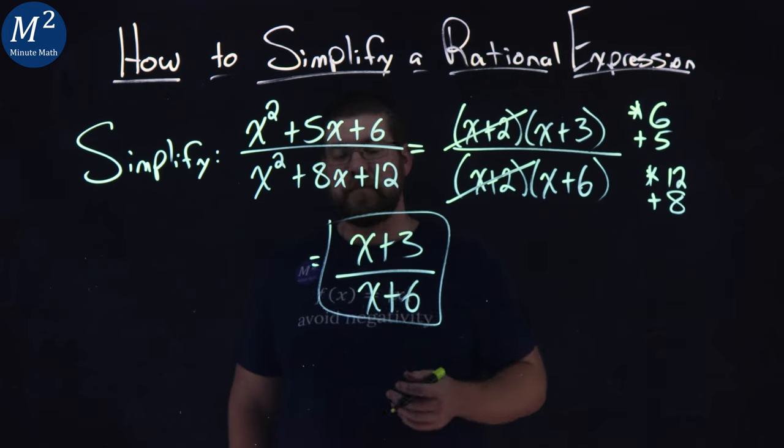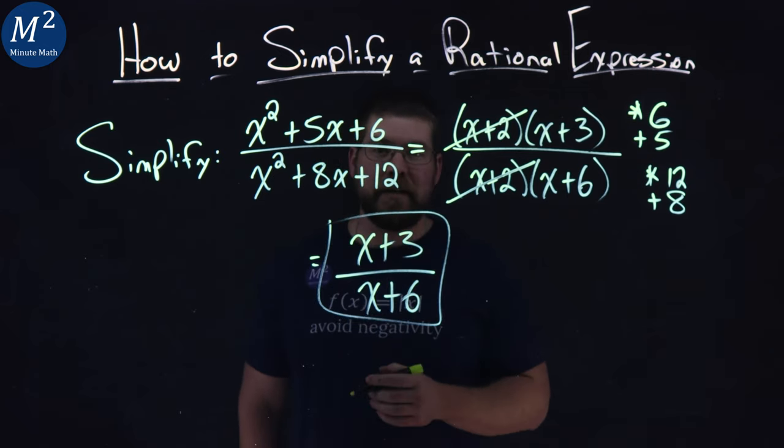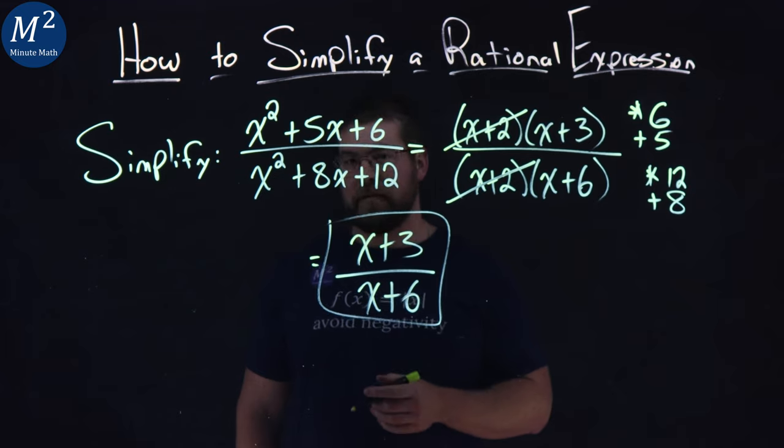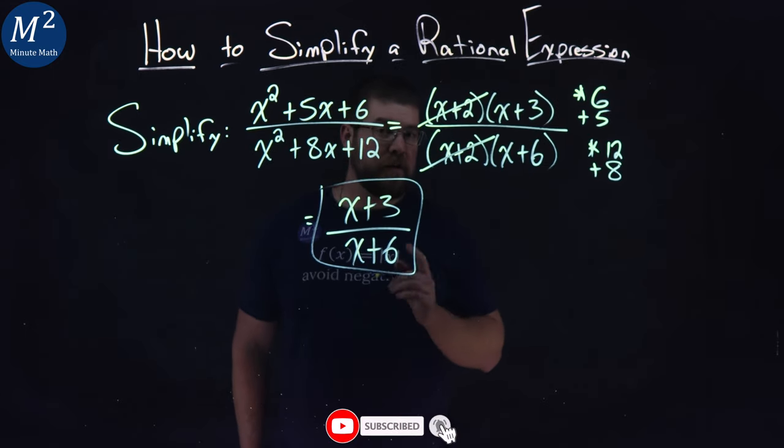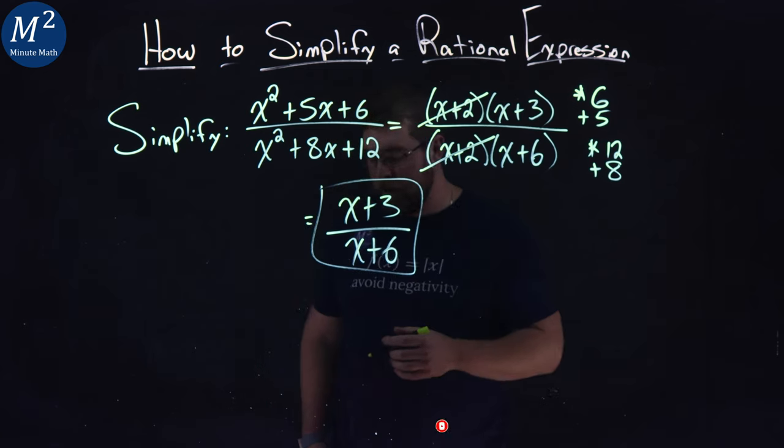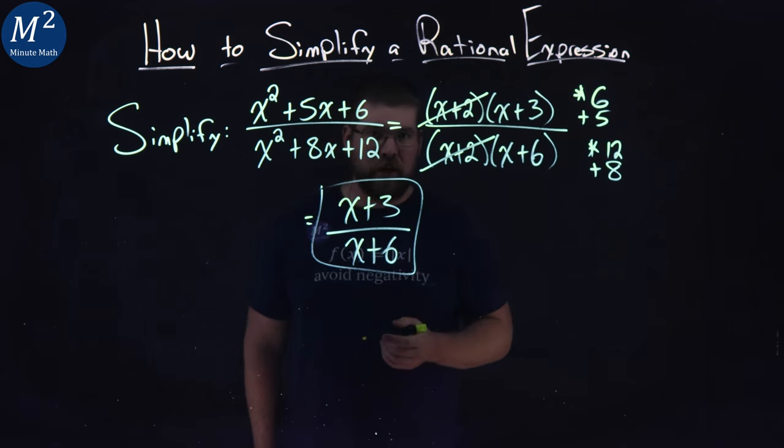So our original rational expression simplifies to just be x plus 3 over x plus 6. Hope you learned something here on how to simplify a rational expression. If you did, make sure you like this video and subscribe to our YouTube channel. This helps us make more of these free math lessons for you and for everyone else. So as always, thanks for watching.